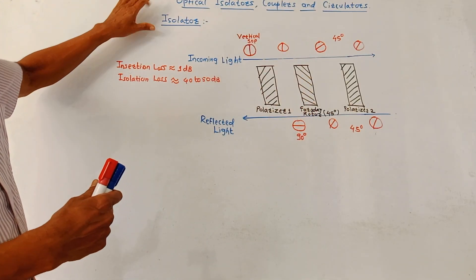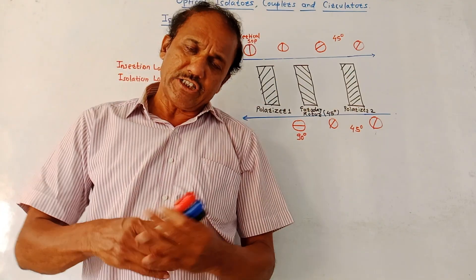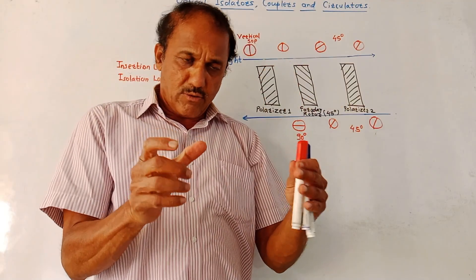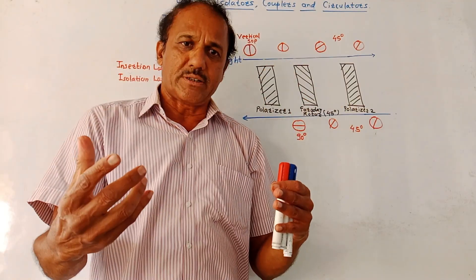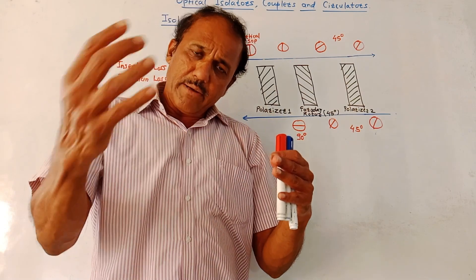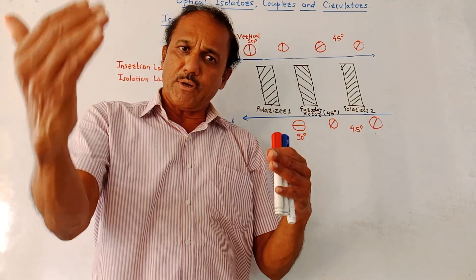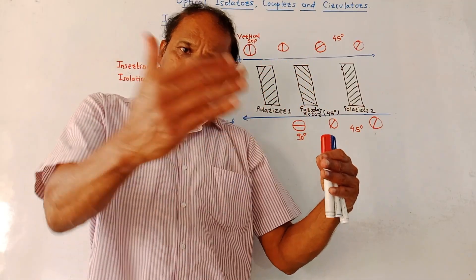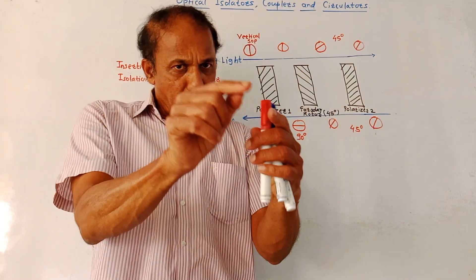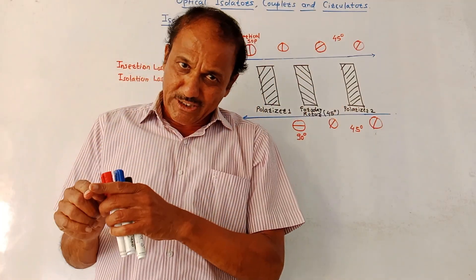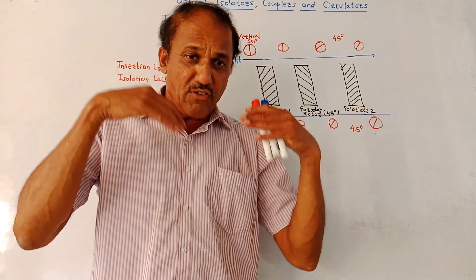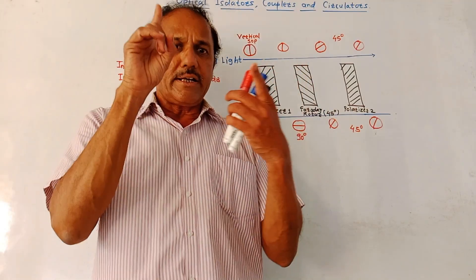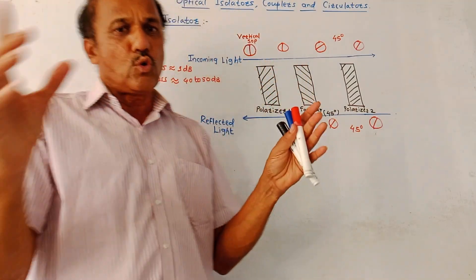First is the optical isolator. As the name indicates, it provides isolation between source and detector. Suppose we are using a laser as a light source — there may be certain reflections from the destination, from the receiving end. If reflected light comes back to the laser source, it will cause an effect on the oscillations of the laser. So to avoid this, an optical isolator is placed between source and detector.